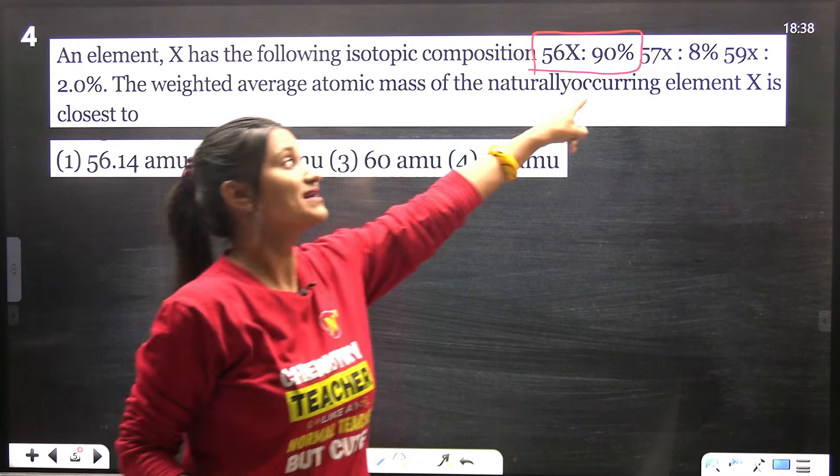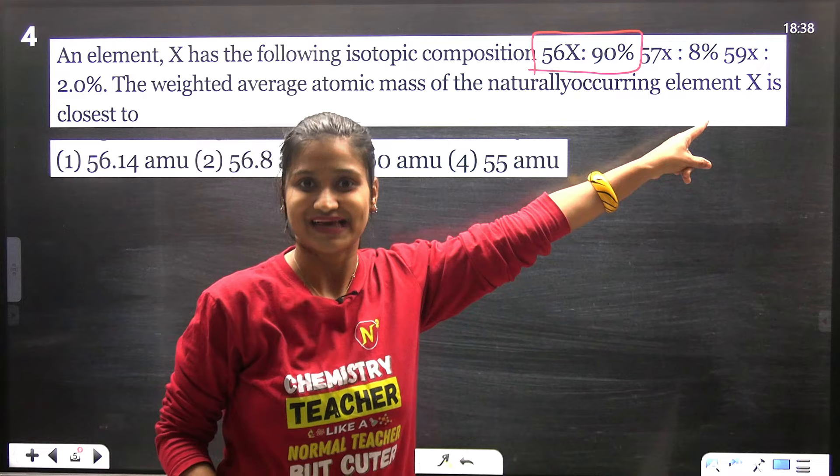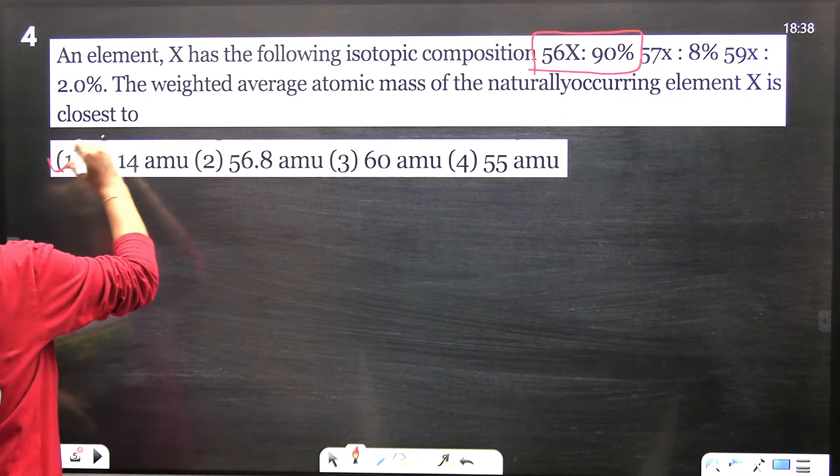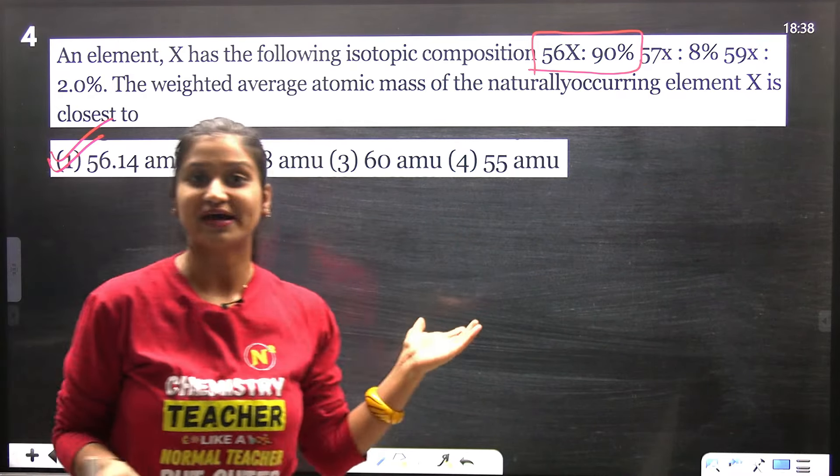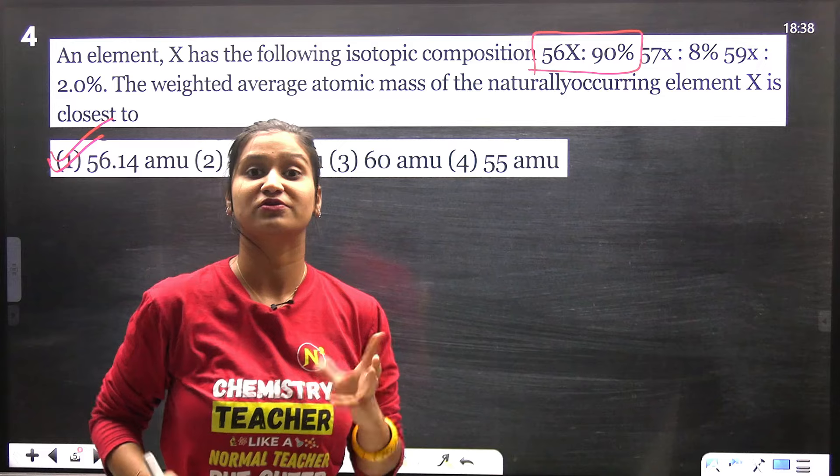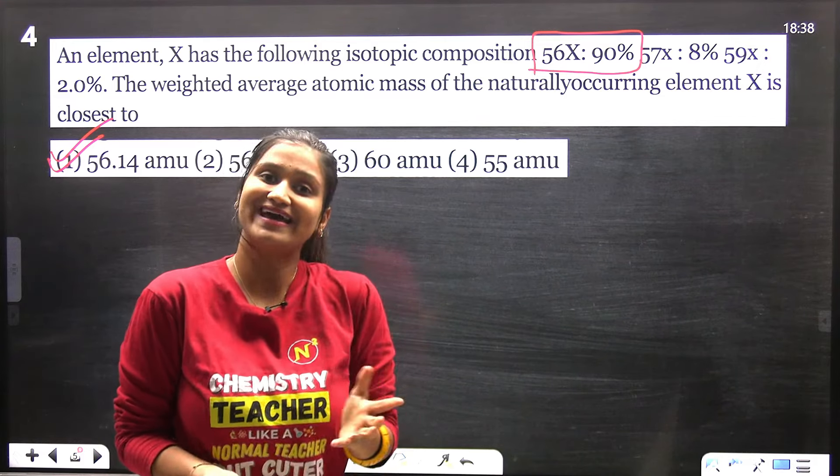56.8 is more close to 57. So our answer is option number 1. If you want, you can solve using the formula, but it is not required.